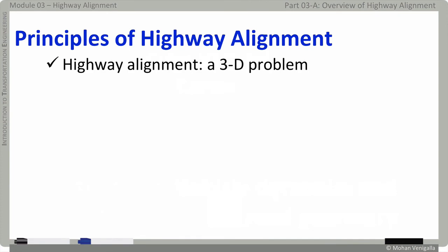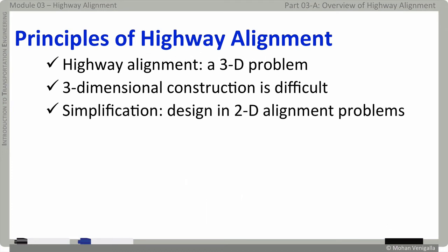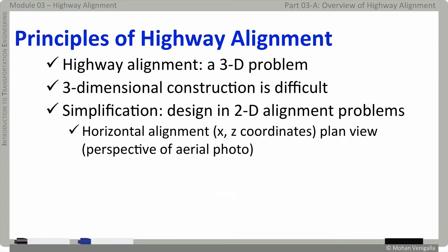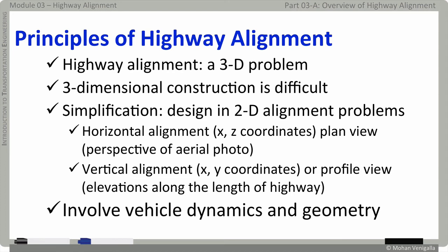Principles of highway alignment: highway alignment is a three-dimensional problem. As you can imagine, three-dimensional construction is complicated. To understand highway alignment principles, we deal with 2D problems. For horizontal alignment, we will deal with plan view and X and Z coordinates. For vertical alignment, we will deal with X and Y coordinates. Highway alignment involves both vehicle dynamics and geometry.